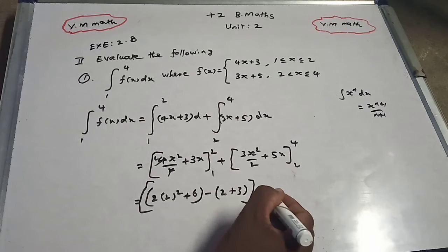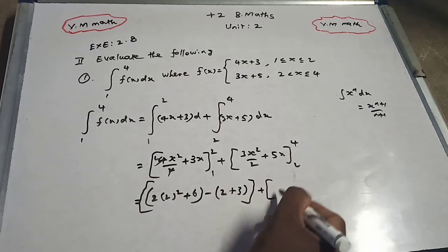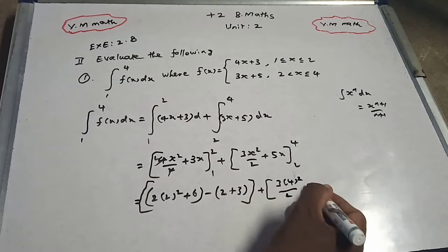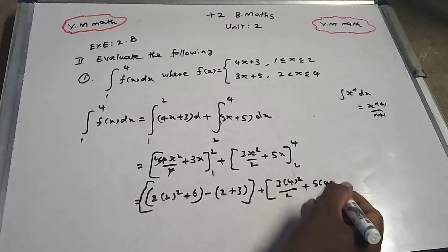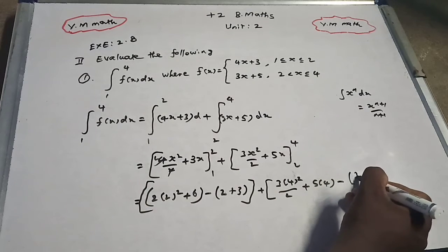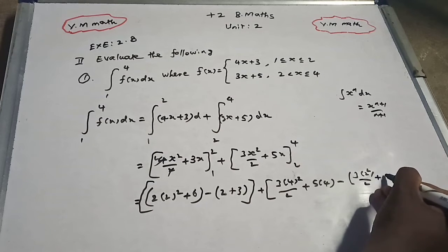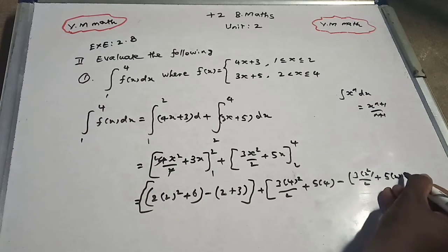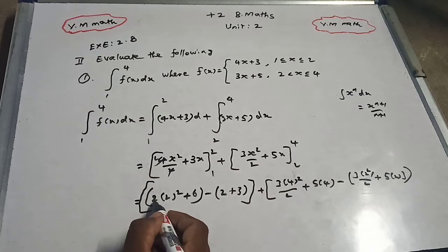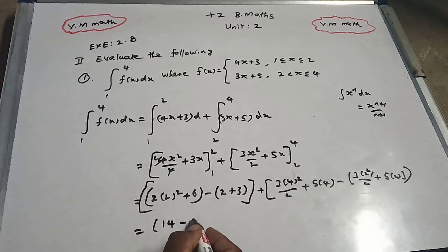Plus the second part: the upper limit x is 4, so 3 times 4 squared divided by 2 plus 5 times 4, this is the upper limit. Minus lower limit: 3 times 2 squared divided by 2 plus 5 times 2. 2 squared is 4, times 2 is 8, so this is the upper limit, that is 14 minus 5.